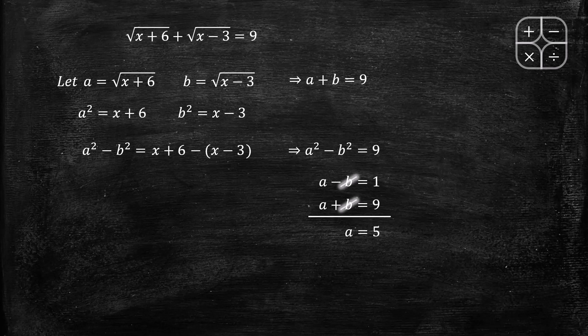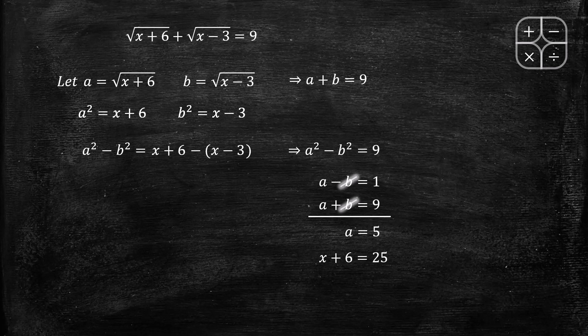Since a equals 5 and a equals square root of x plus 6, we get x plus 6 equals 25, so x equals 19. Therefore x equals 19 is the solution.